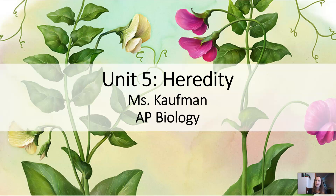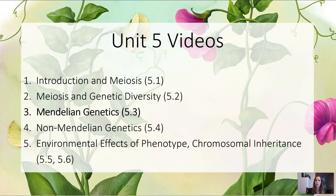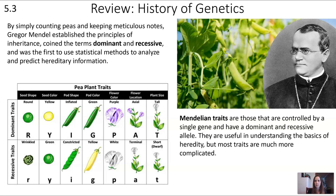AP Biology Unit 5, Heredity — this is video three where we'll talk about Mendelian genetics. The idea of a Mendelian trait is one that's controlled by a single gene that has a dominant and a recessive allele. These are useful in understanding the basics, though most traits go beyond that, and we'll get to that in future units.